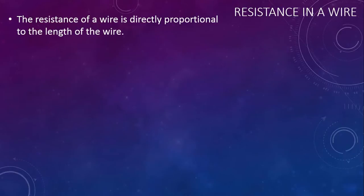First of all, the resistance of the wire is directly proportional to the length of the wire. Think about it like this: it's harder for electrons to get through a long wire than it would be for them to get through a short wire.